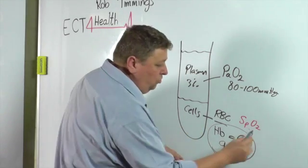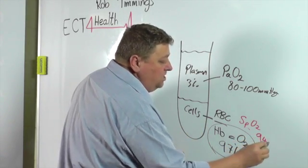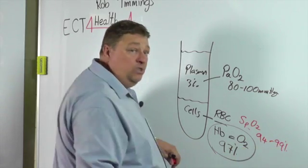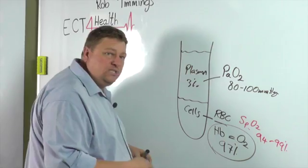The normal value is about 94 to 99%. Once it gets lower than 94, we call that hypoxemia.